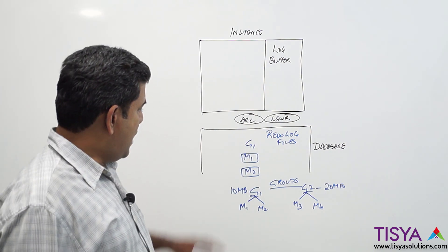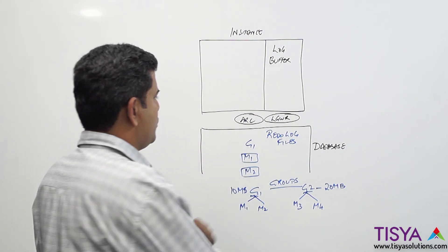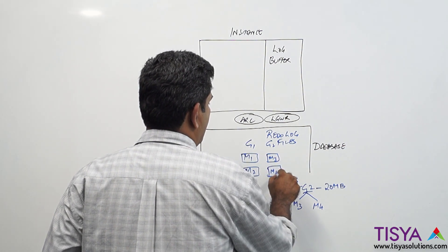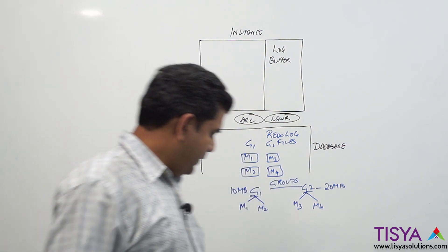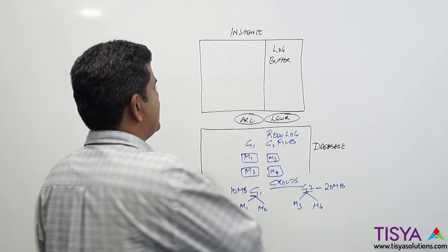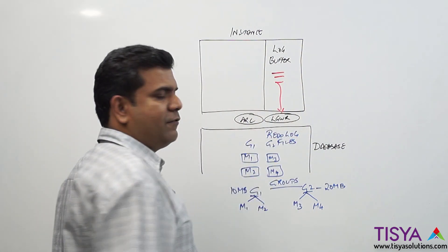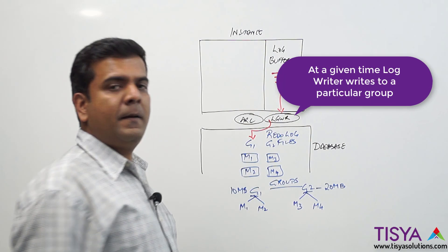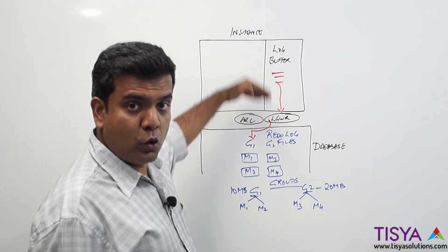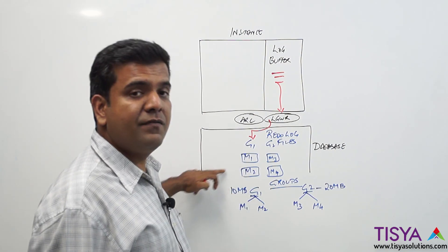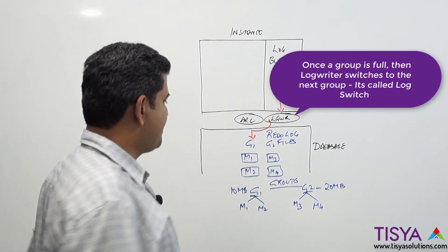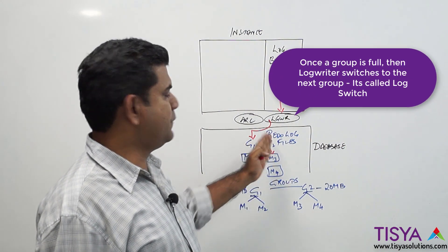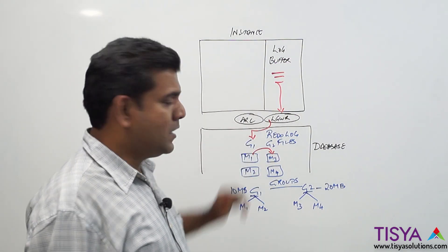With group one having member one and member two, and group two having member three and member four — whenever the log writer writes down contents, it writes to a particular group. For example, it currently writes to group one, emptying the log buffer into group one until the 10 MB is filled. Once the group is filled, it switches over to the second group.